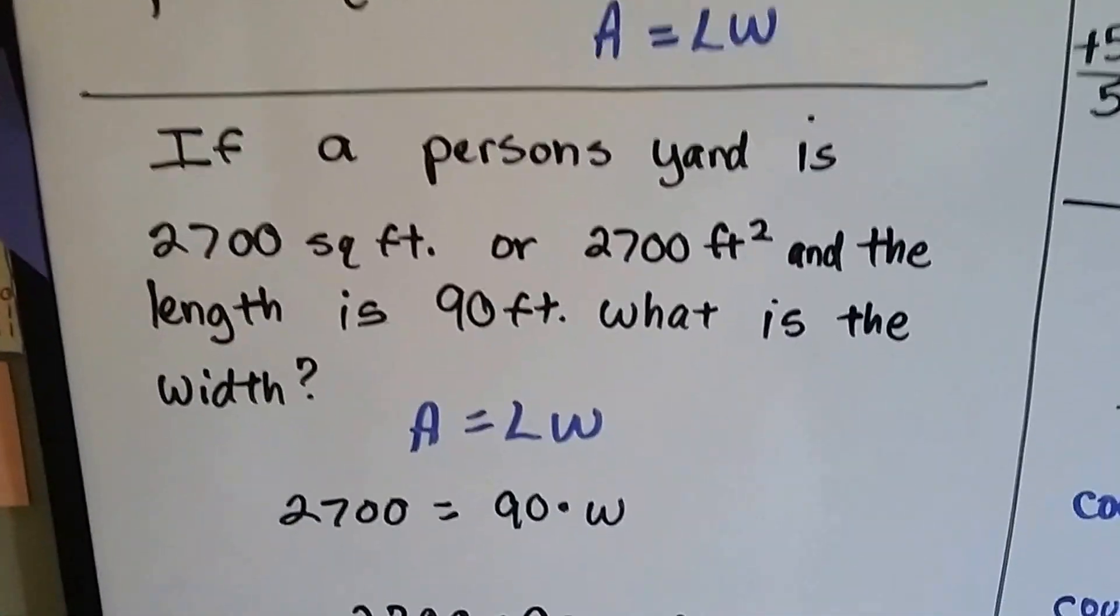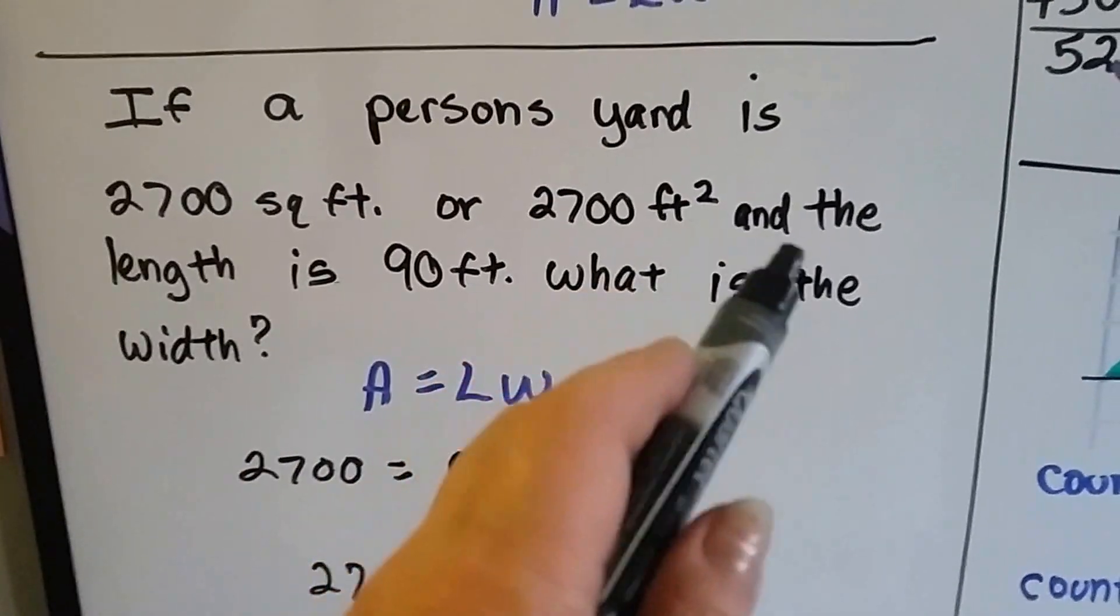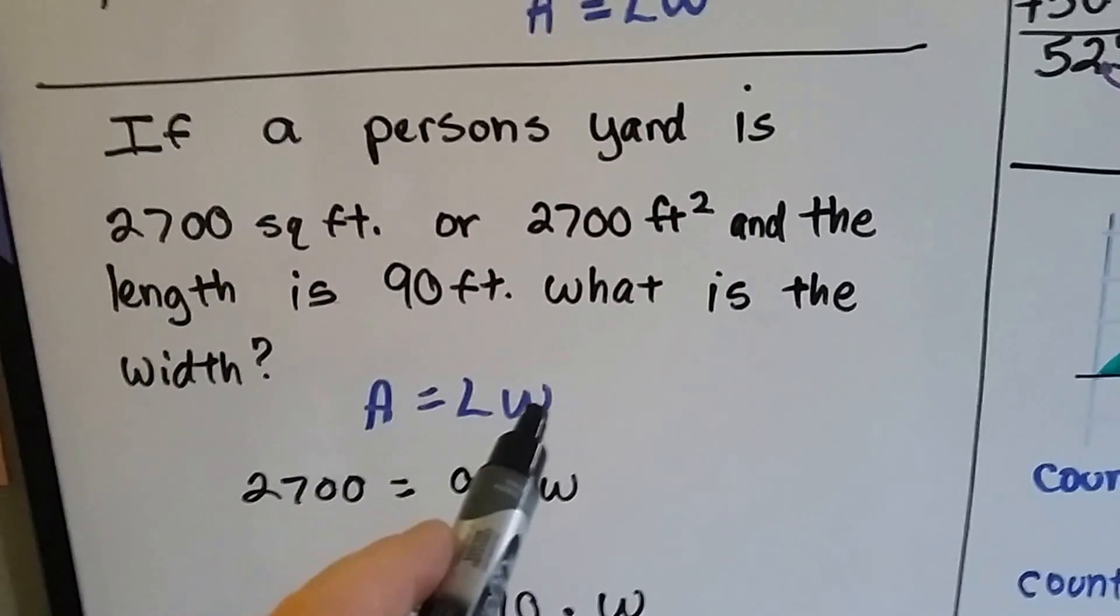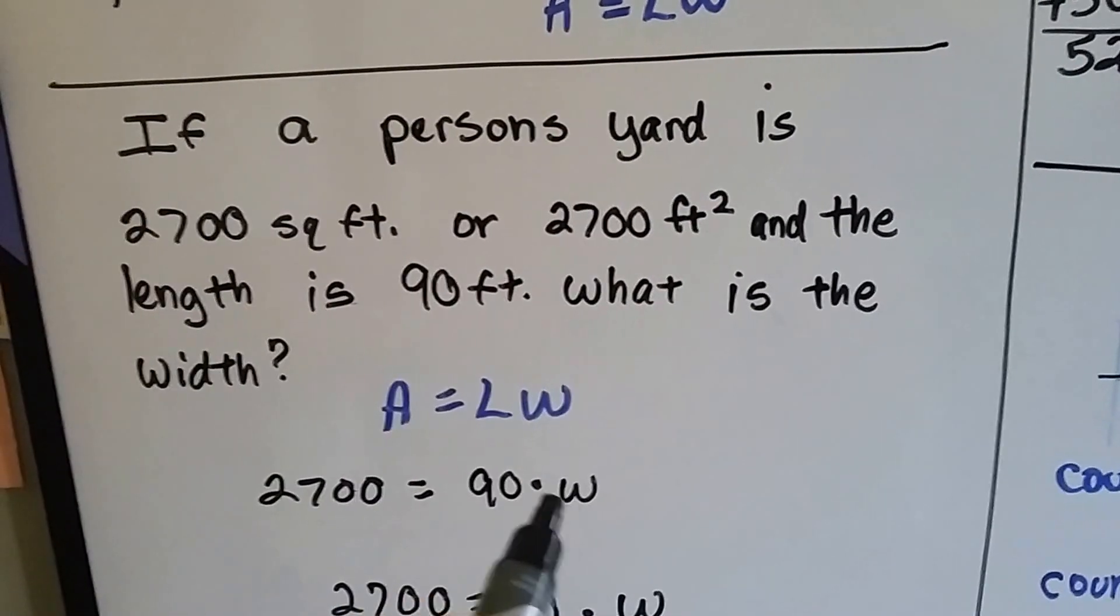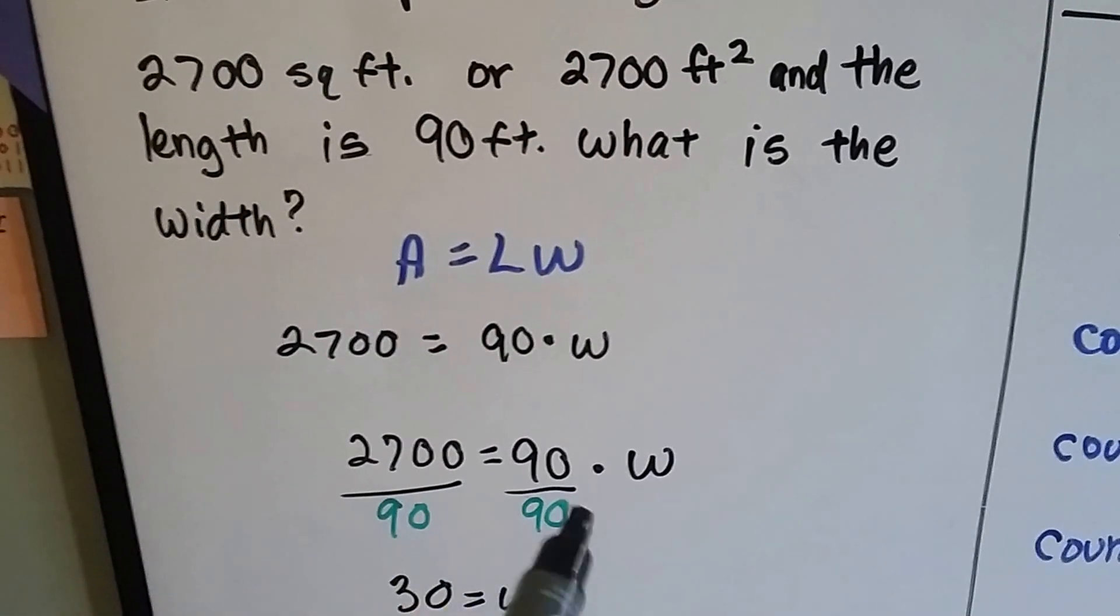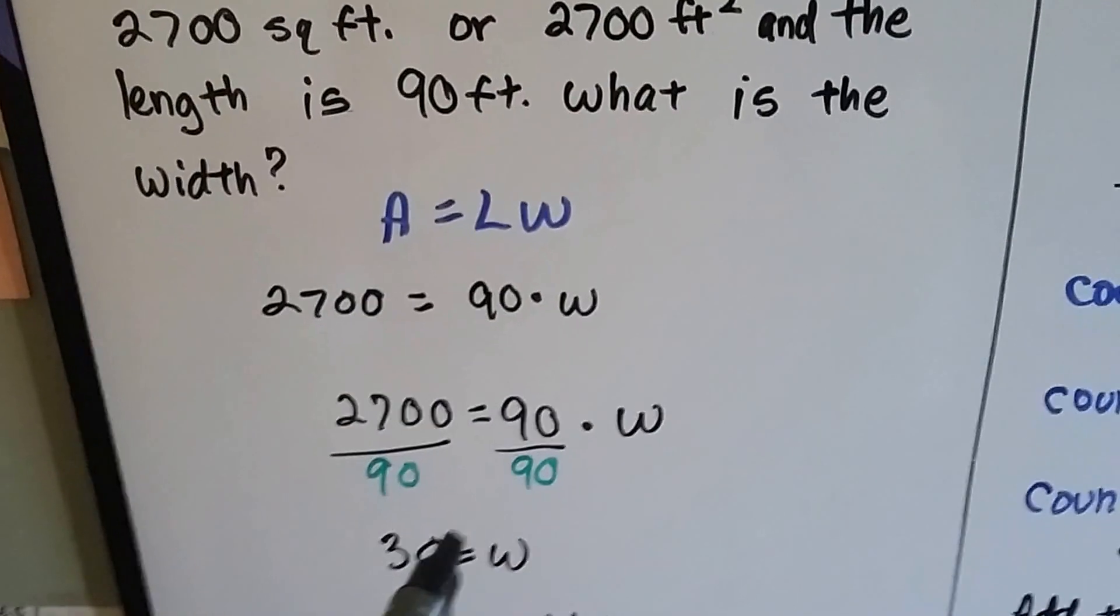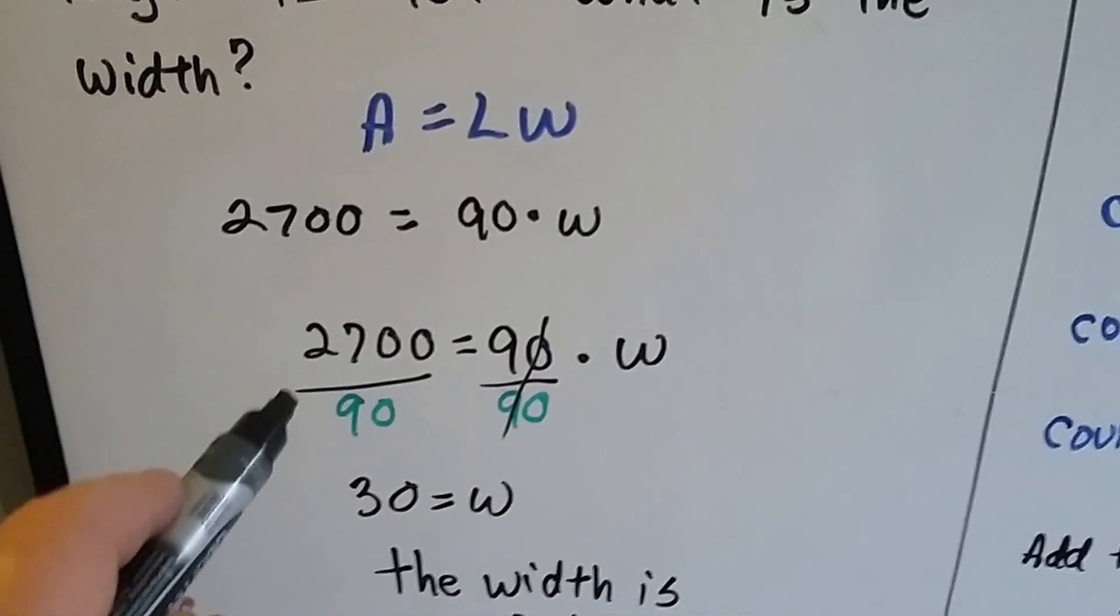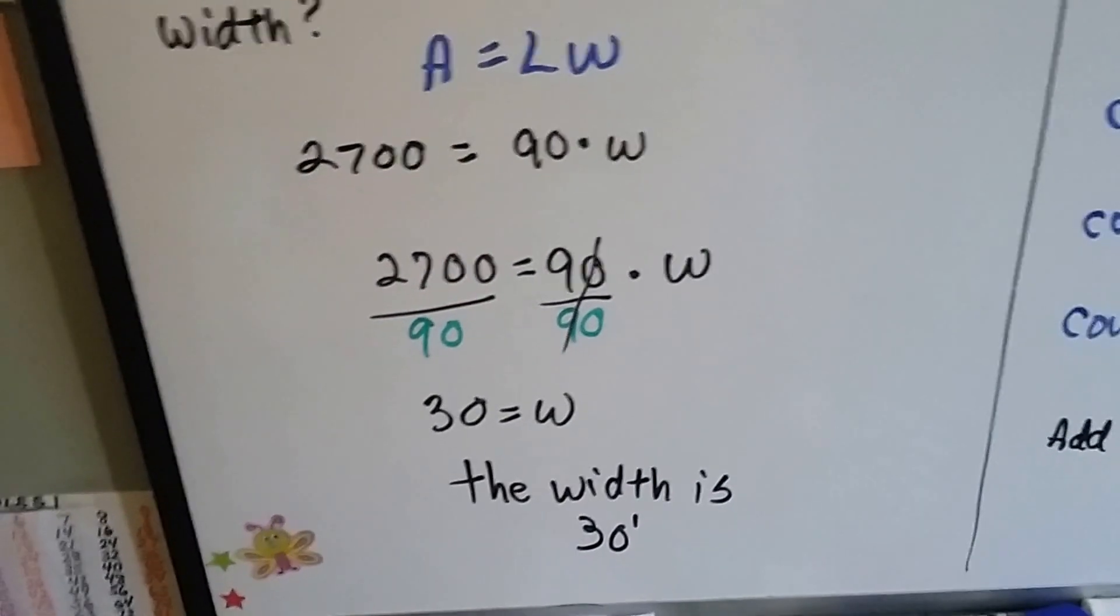If a person's yard is 2700 square feet and the length is 90 feet, what is the width? Area equals length times width. So that means 2700 is equal to 90 times w, the width. All we have to do is divide both sides by 90, which is the inverse of this multiplication. The 90 cancels out itself here. And 2700 divided by 90 is 30. We know the width is 30 feet.